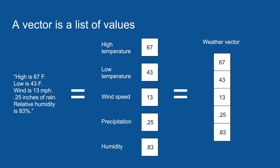At this point, it's helpful to take a little detour and talk about vectors. A vector is just a fancy word for a list of numbers. For instance, to describe the weather for a given day, I could say the high is 76 degrees Fahrenheit, the low is 43, the wind is 13 miles an hour, there's a quarter inch of rain, and the relative humidity is 83%. That's all a vector is.